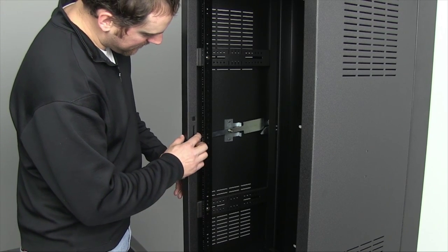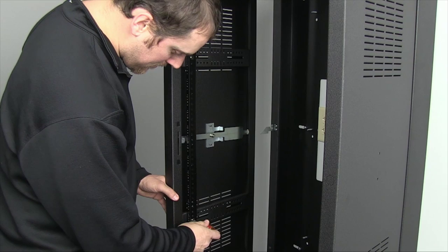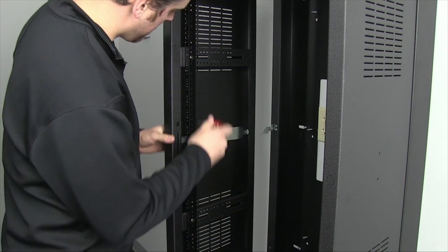Another feature shared across all Chief racks are depth adjustable rack rails. Loosen the attachment screws and slide the rail to the desired position.